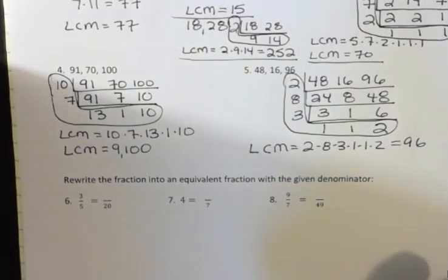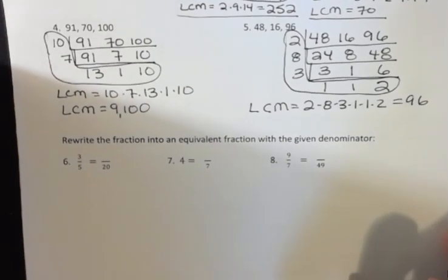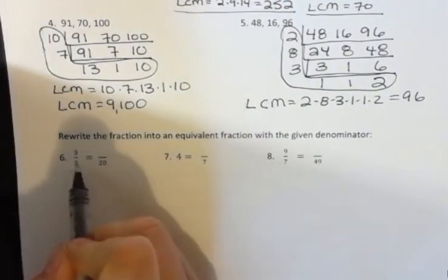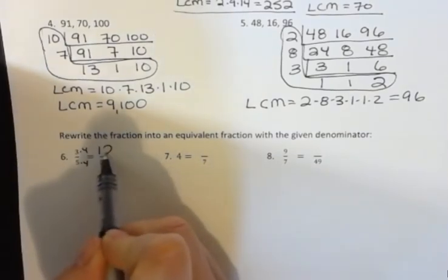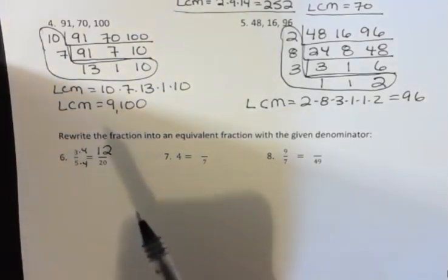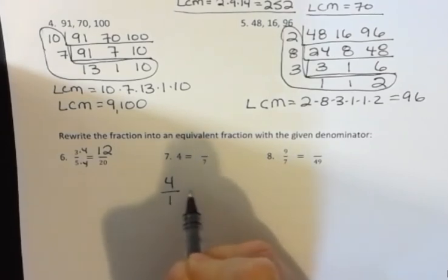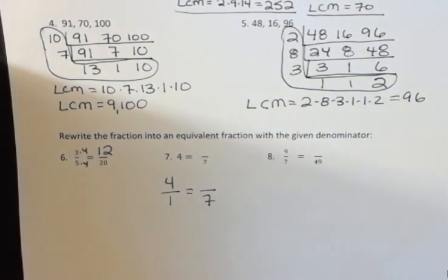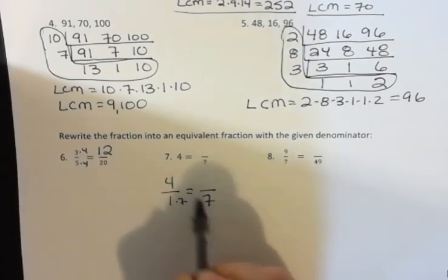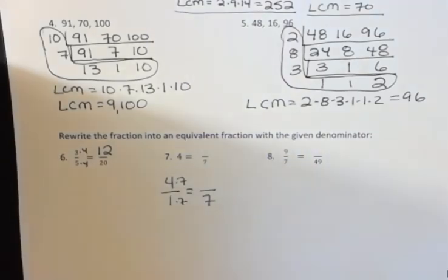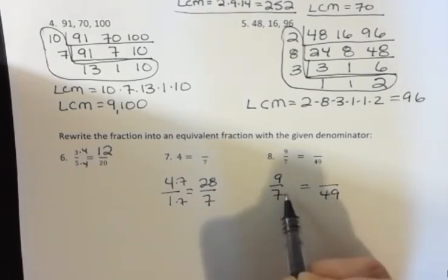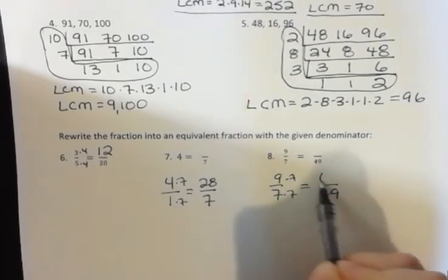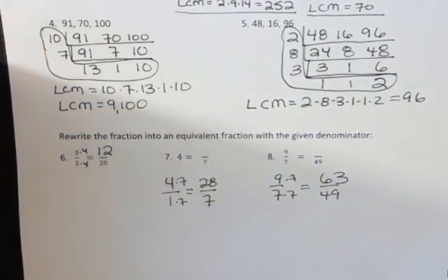Finally on this video I wanted to talk about building a fraction into an equivalent fraction. If I have three fifths and I want to rewrite it with a denominator of 20, I would multiply four times five to get 20. So I'm going to multiply three times four and that would give me twelve twentieth. These are equivalent fractions with different denominators. If I have four I can think of that as four over one. And if I want to get a denominator of seven I'm going to multiply by seven. So I have to do the same thing on the top. Four times seven is twenty-eight. And over here I have nine sevenths and I want to get to forty-nine. I'm going to multiply by seven. And nine times seven is sixty-three. So I can always build a fraction by multiplying both the numerator and the denominator by the same number.